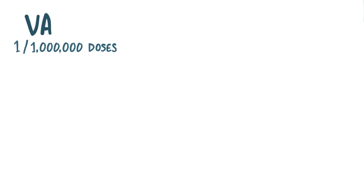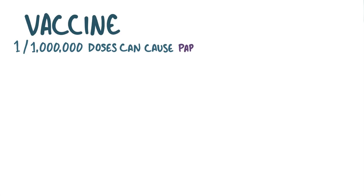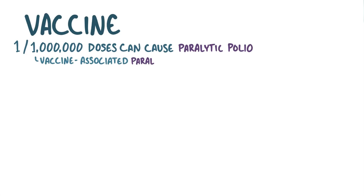Very rarely, about one time in a million doses of the vaccine, the weakened virus in OPV mutates within the intestines of the person getting vaccinated, and it reverts to a form of the poliovirus that can cause paralytic polio, called Vaccine Associated Paralytic Polio, or VAPP for short.